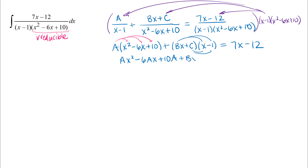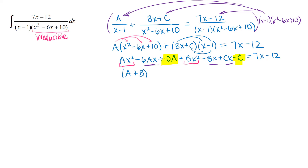Distributing, I'll have Ax squared minus 6Ax plus 10A, and then foiling the second term gives plus Bx squared minus Bx plus Cx minus C, and all of that equals 7x minus 12. On the left side I have x squared terms, x terms, and constant terms — remember A, B, and C are constants I need to find. I'll regroup: the x squared coefficient is A plus B, the x coefficient is minus 6A minus B plus C, and the constant term is 10A minus C.